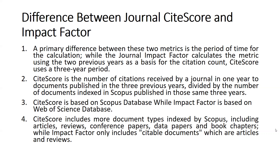CiteScore is based on the Scopus database while Impact Factor is based on the Web of Science database. CiteScore includes more document types indexed by Scopus, including articles, reviews, conference papers, data papers, and book chapters.